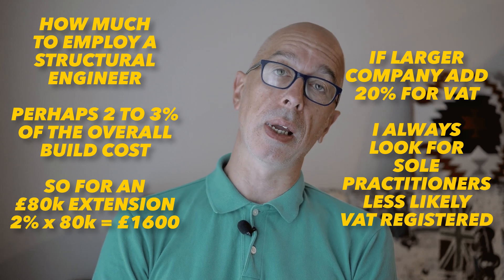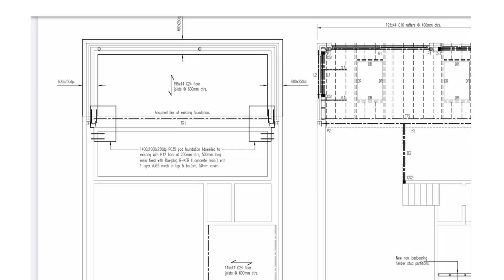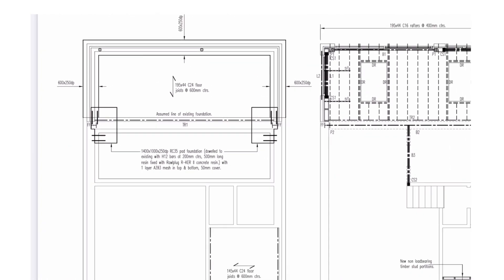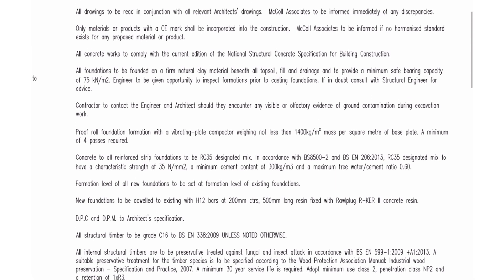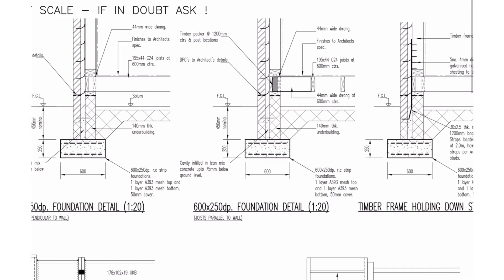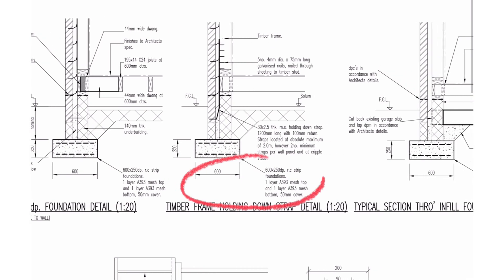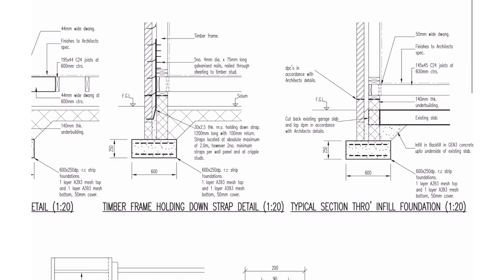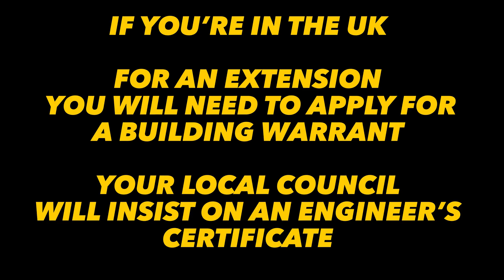If you employ a structural engineer, you end up with a set of drawings looking a bit like this — pretty similar to our own, but with additional information such as the strength of the concrete, which gives the mix ratio of cement to sand to aggregate needed when mixing on site, the type of steel mesh required, and a whole load of other details. If you're applying for building regulations permission, you'll have to get an engineer's certificate anyway.